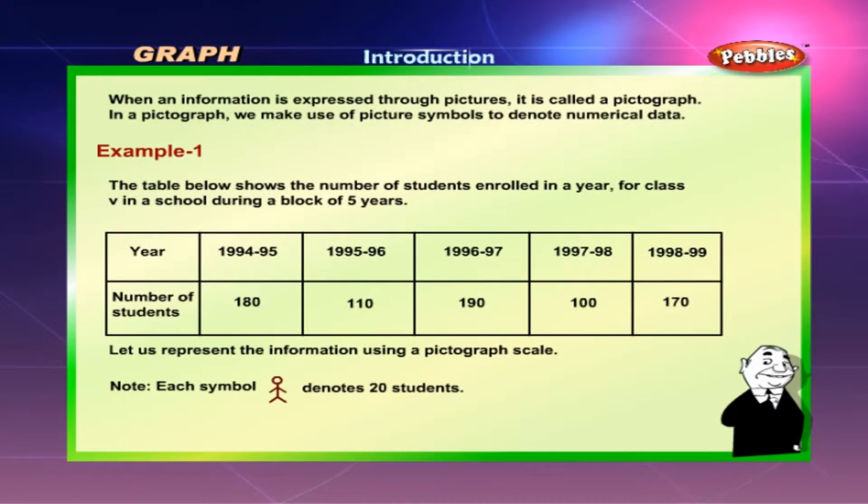Graph introduction: when information is expressed through pictures, it is called a pictograph. In a pictograph we make use of picture symbols to denote numerical data. Example 1: The table below shows the number of students enrolled in a year for class 5 in a school during a block of 5 years.